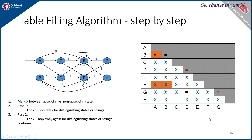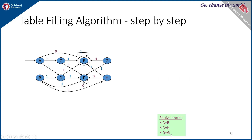These are the minimized states — whichever pairs are equivalent. So C is equivalent to H, D is equivalent to G, and A is equivalent to B. We have three pairs of equivalent states. To construct the minimized DFA, remove one state from each equivalent pair — removing B, G, and H, and combining them into single states.